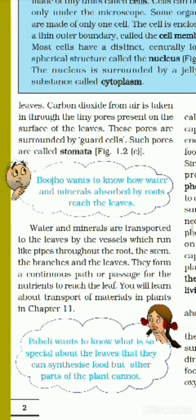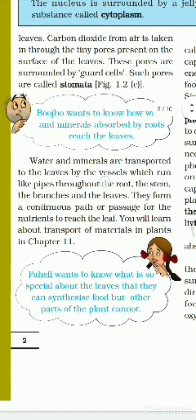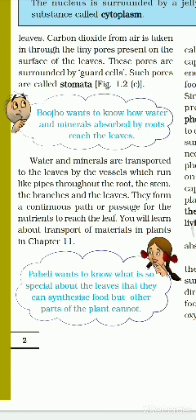Water and minerals are transported to the leaves by vessels which run like pipes throughout the root, the stem, the branches, and the leaves. They form a continuous path or passage for nutrients to reach the leaves.